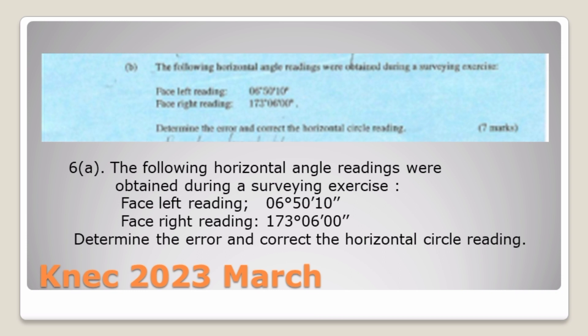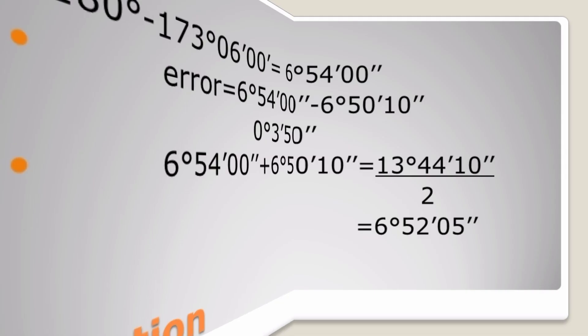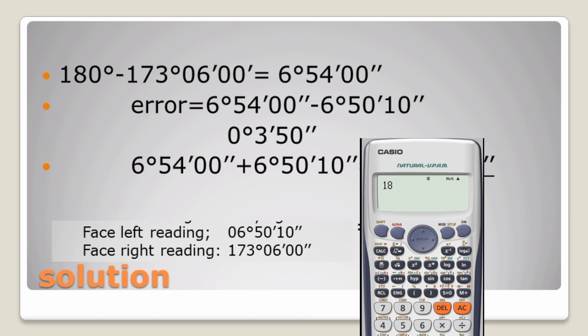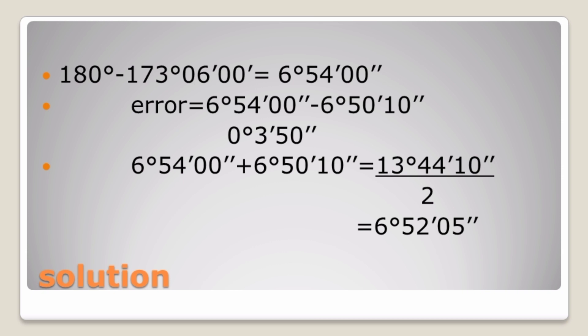Having learned that, I go ahead. I want to know my face right that was obtained from my face left. I go ahead and minus 180 degrees to my face right in order for me to get the correct face left reading. So 180 degrees minus 173 degrees 6 minutes 0 seconds. By the use of a calculator, we go ahead and we get 6 degrees 54 minutes 0 seconds.